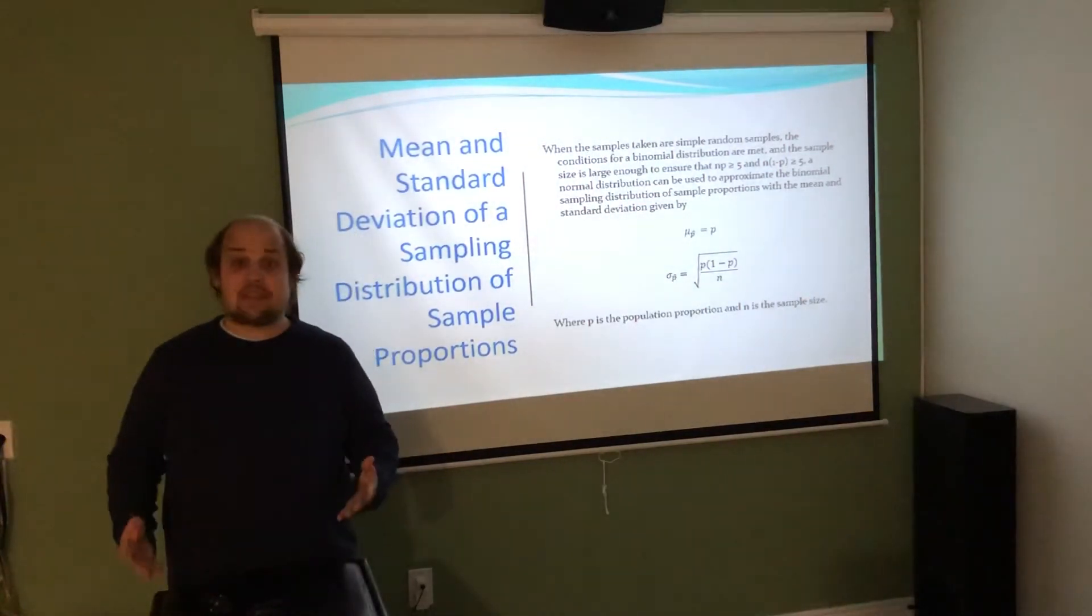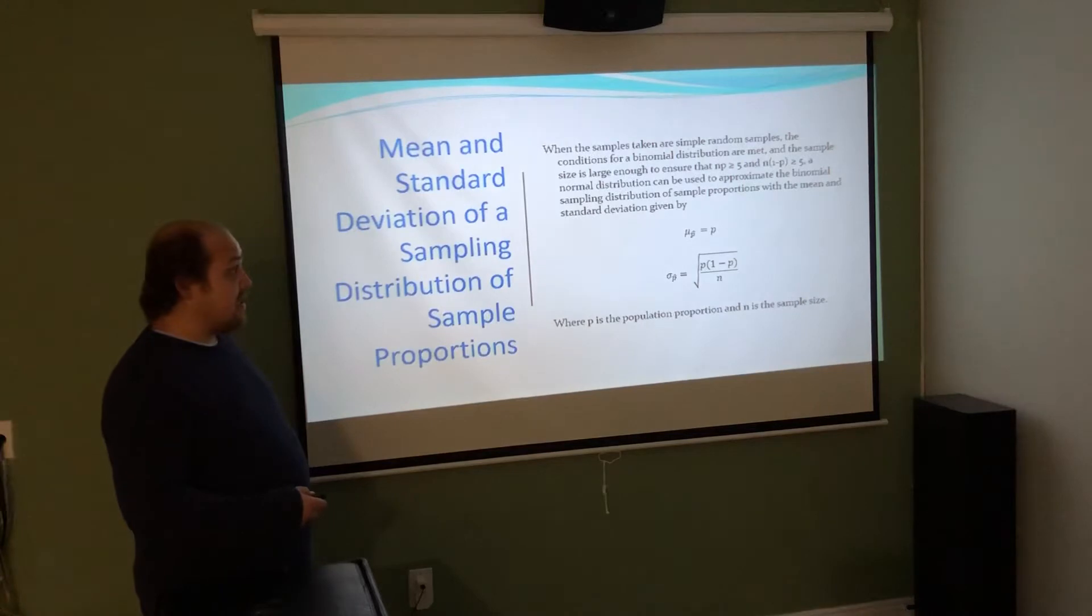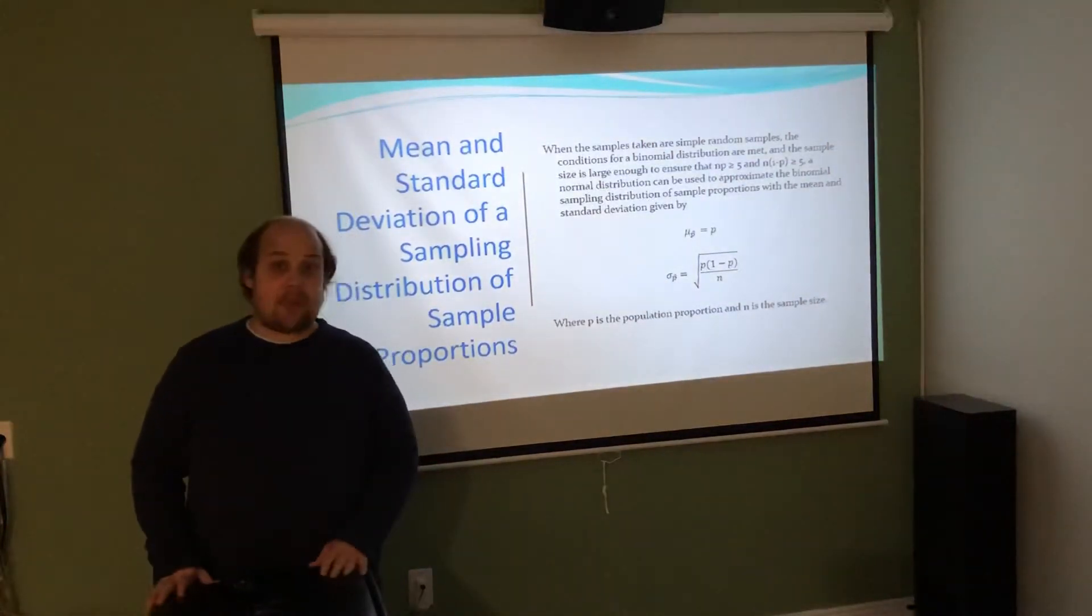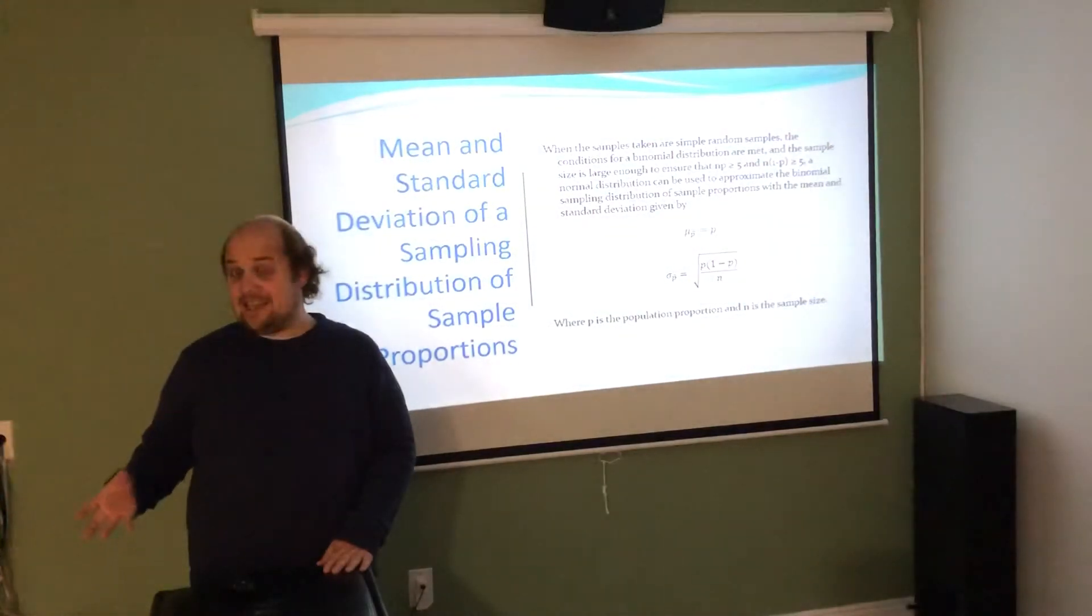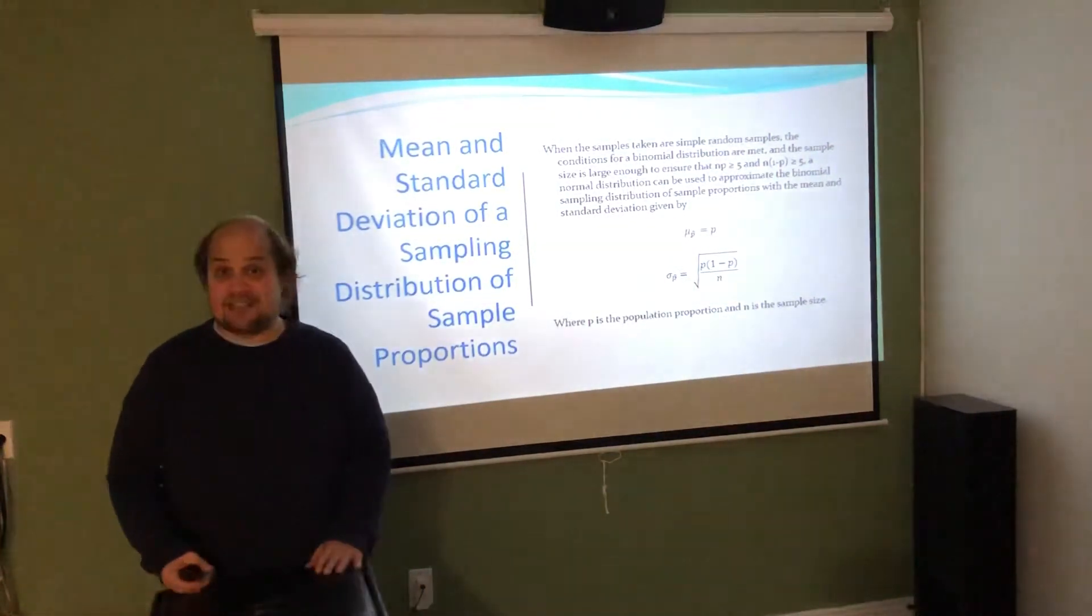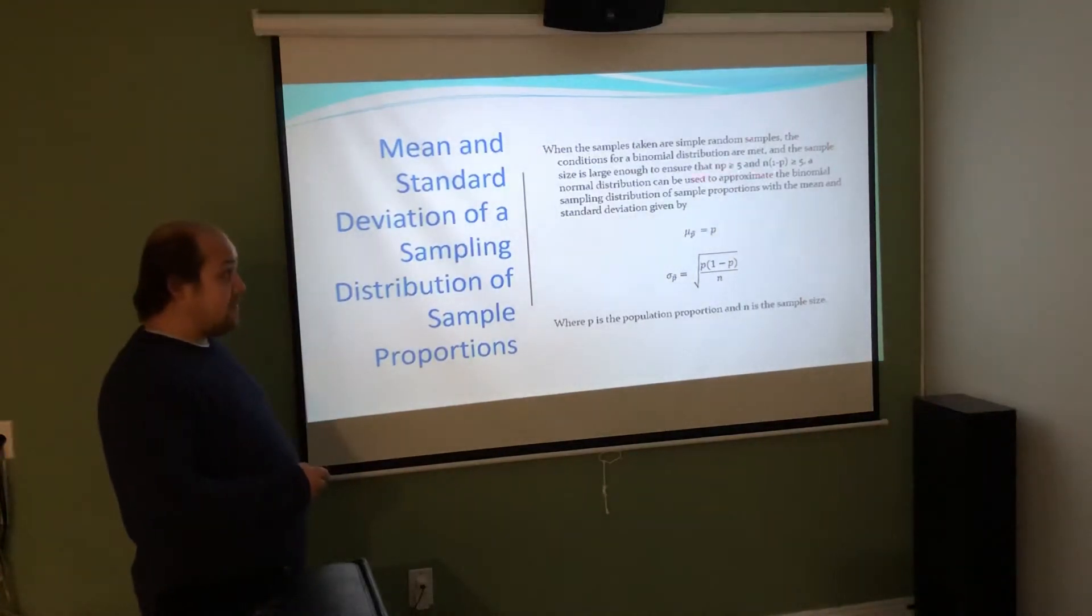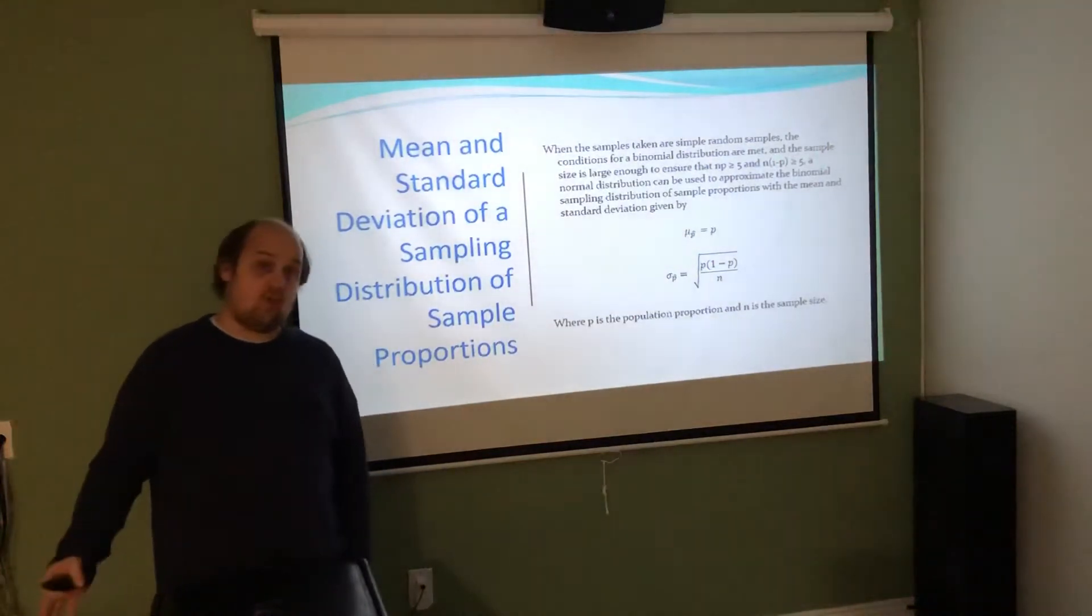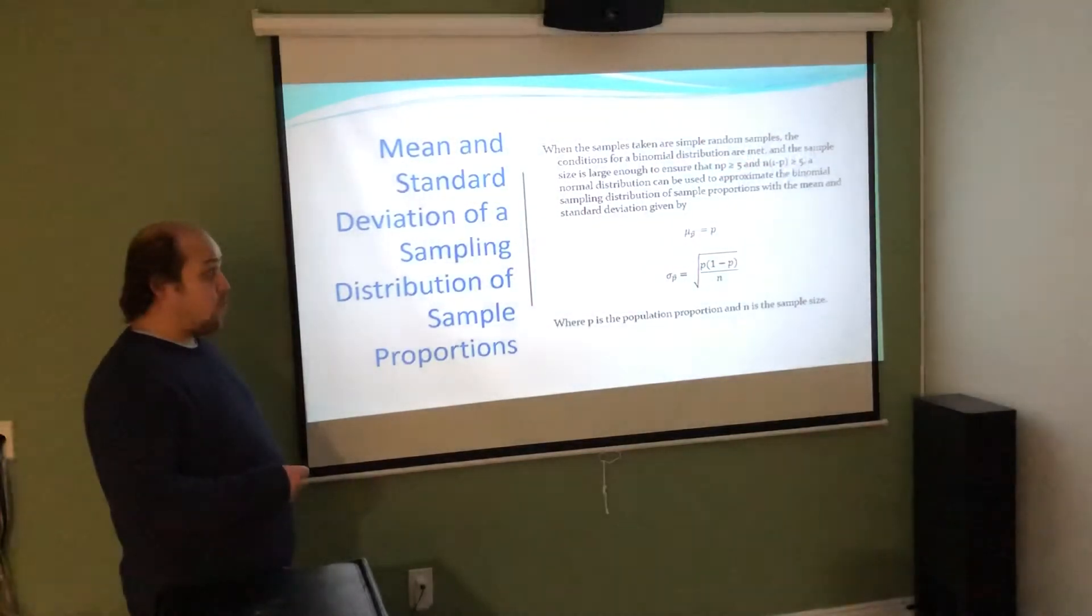Just to touch on what this NP greater than 5 and N(1-p) greater than or equal to 5 means: if I wanted to test how many people have antibodies for a certain disease, if it's very rare and I test 100 people, it's very likely nobody has the antibodies. If 1 in 1,000 people has it in the population, I probably need to test 5,000 people before my sample size is big enough. Otherwise, if you keep getting 0 people with something, it's really hard to quantify what the probabilities were.